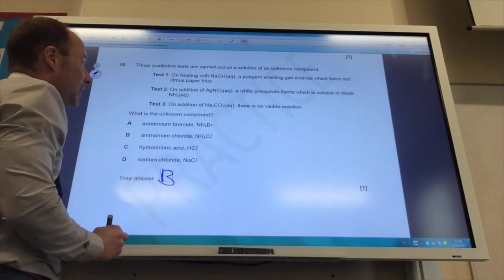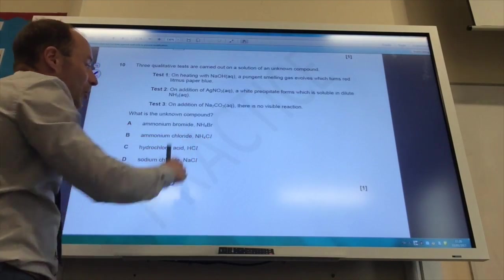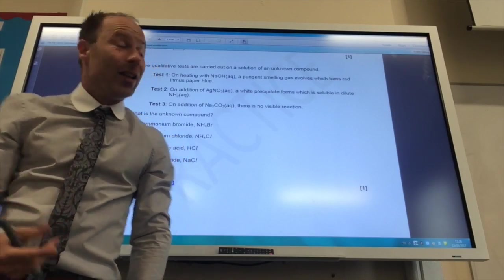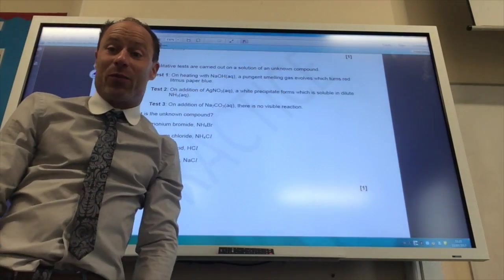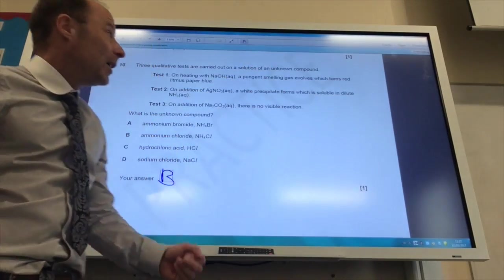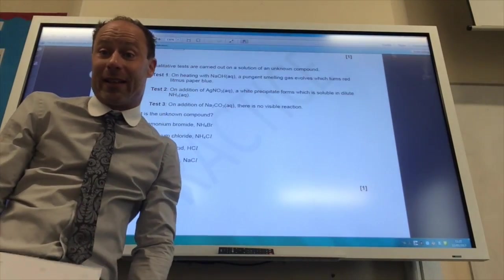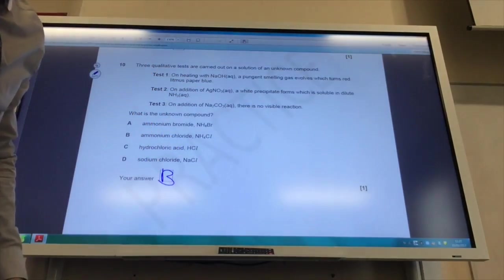Therefore it is going to be B, ammonium chloride, because ammonium compounds, if you heat them with sodium hydroxide, they produce ammonia gas, which would be this pungent smelling gas, which is of course going to turn litmus paper blue because it's an alkaline.